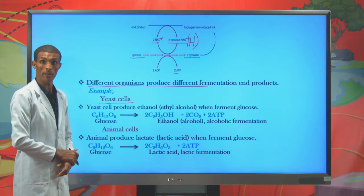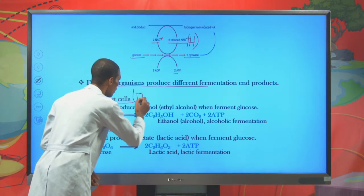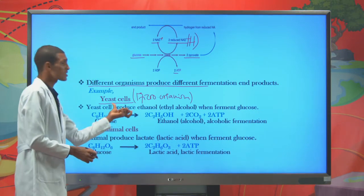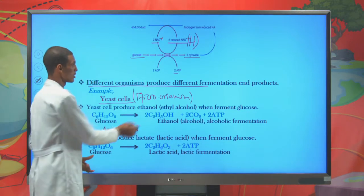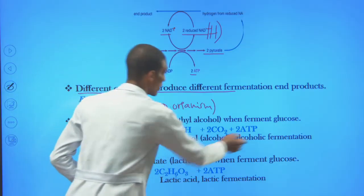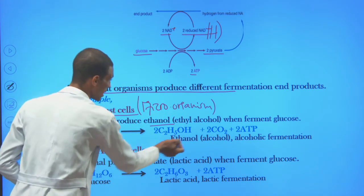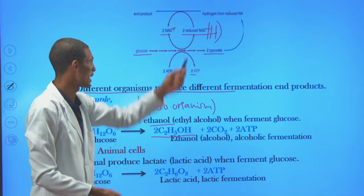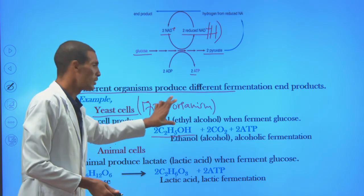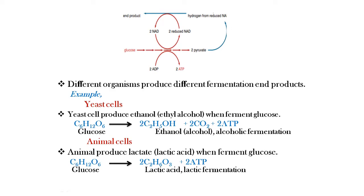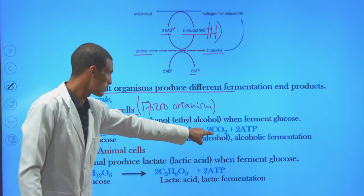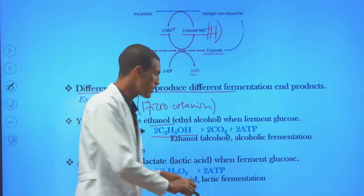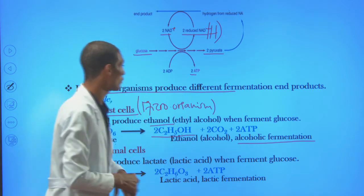For example, yeast cells — which are microorganisms — carry out anaerobic fermentation. The end product that yeast produces when they ferment glucose is ethanol, or alcohol. When they ferment glucose — a six-carbon molecule — there is ethanol, two carbon dioxide molecules, and two ATP produced. The end product of alcoholic fermentation in yeast is ethanol and two carbon dioxide. This type of reaction is called alcoholic fermentation because the end product is alcohol.